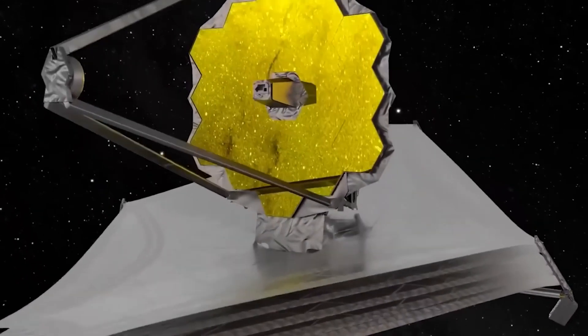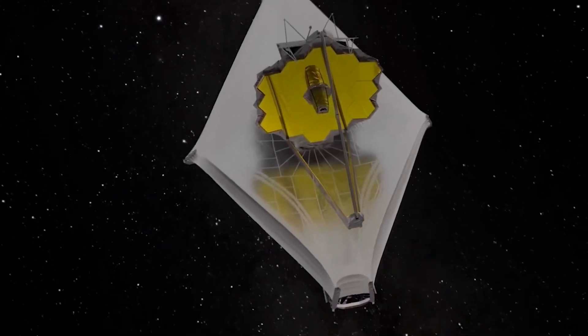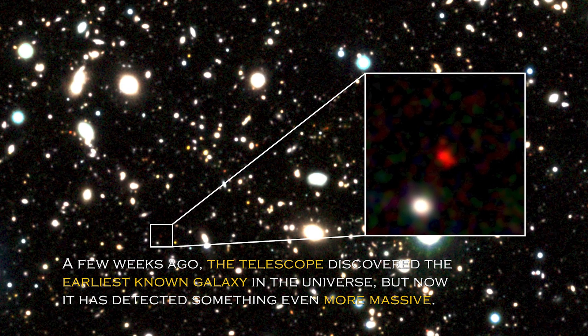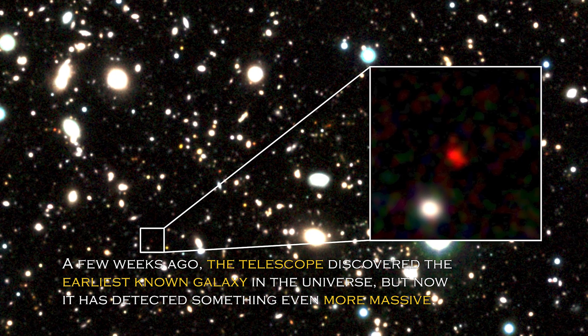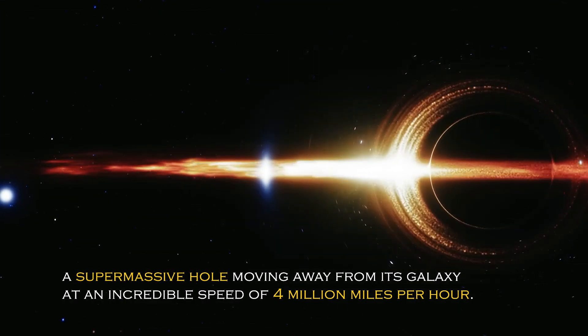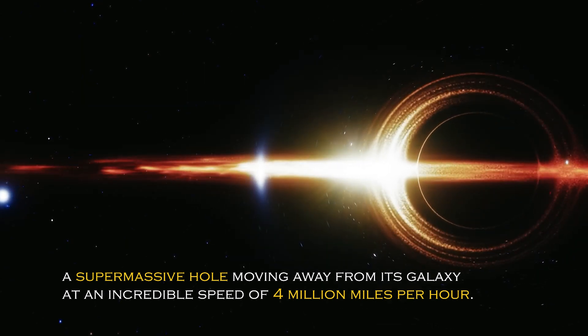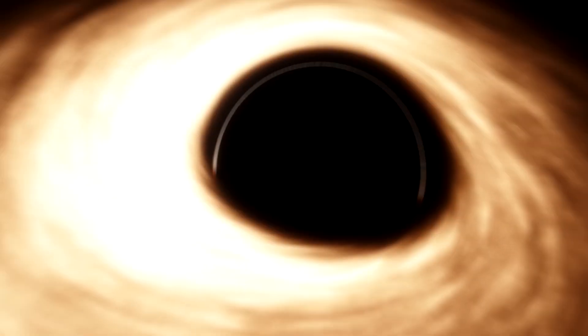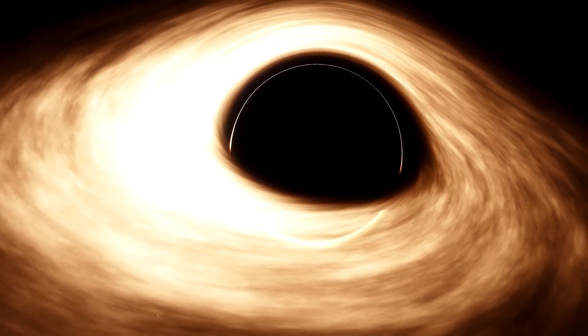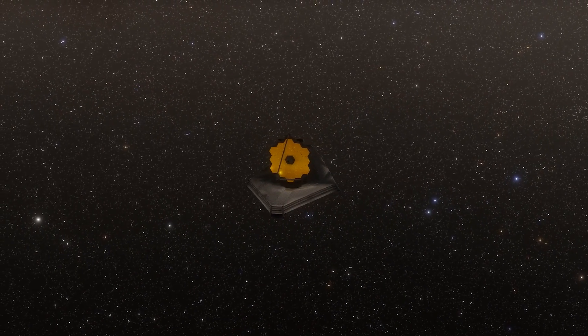In a surprising turn of events, NASA's James Webb Space Telescope has made a discovery that has astronomers around the world in awe. A few weeks ago, the telescope discovered the earliest known galaxy in the universe, but now it has detected something even more massive – a supermassive black hole moving away from its galaxy at an incredible speed of 4 million miles per hour. This discovery has very important implications and has generated much speculation among scientists and space enthusiasts about what it means for our understanding of the cosmos.